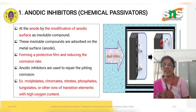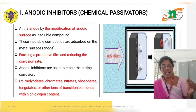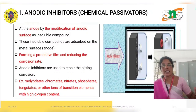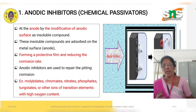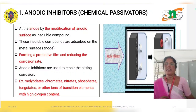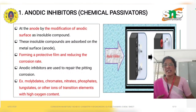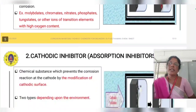Anodic inhibitors reduce the corrosion that occurs at the anode: the newly formed metal ion reacts with the inhibitor, forms a stable compound, and stops the corrosion. Examples of anodic inhibitors are oxygen-rich compounds, especially molybdates, chromates, nitrates, and phosphates. Most transition elements with high oxygen content act as anodic inhibitors.